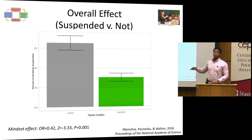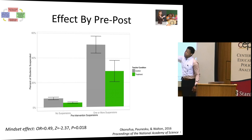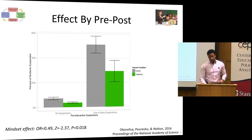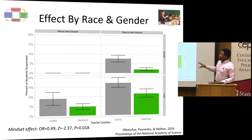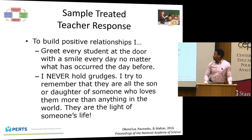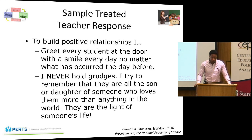There was a 50% reduction in suspensions if a teacher had received the empathic message — across about 2,000 students. The number one predictor of suspensions is having previously been suspended, but regardless of whether that happened, having an empathic teacher makes a student less likely to be suspended. This holds across all race and gender groups. Teachers in the empathy mindset were saying things like: 'I never hold grudges. I try to remember that they are all the son or daughter of someone who loves them more than anything in the world. They are the light of someone's life.'